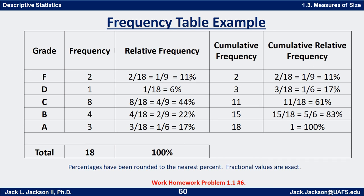The first one is always going to be just whatever the relative frequency was for the first one, and the rest will increase between that lowest value and one hundred percent. The fractional values, whether reduced or not, are exact. The percentage forms are approximations. That gives you a basic idea of what's meant by frequency, relative frequency, cumulative frequency, and cumulative relative frequency.